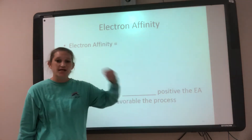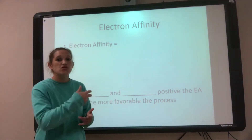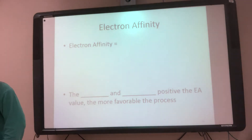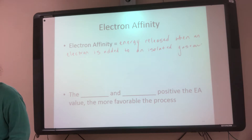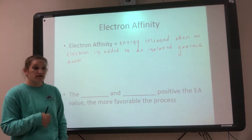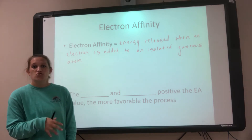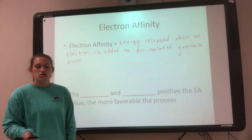Electron affinity is gaining an electron, and gaining an electron is a good thing in this sense. The more energy I release when I gain my electron, the better. Electron affinity is the energy released when an electron is added. It's not saying it takes energy — it's saying I'm going to release energy, and if I release energy I become more stable. So in ionization energy a lot of energy is a bad thing; here a lot of energy is a good thing. It's the complete opposite.